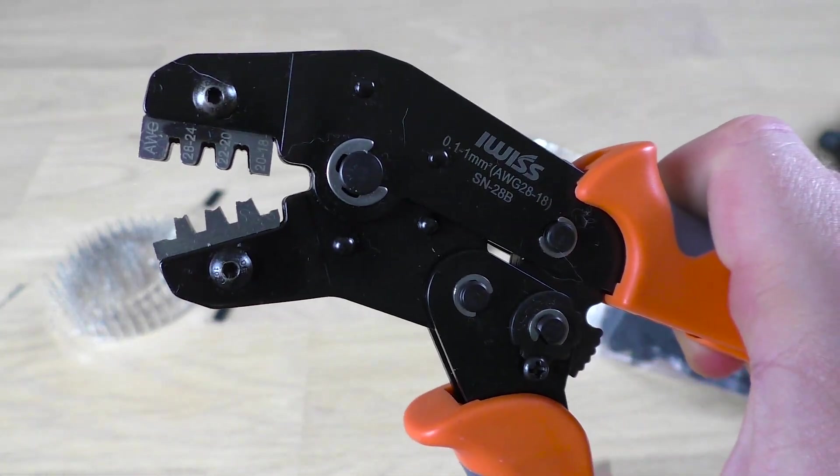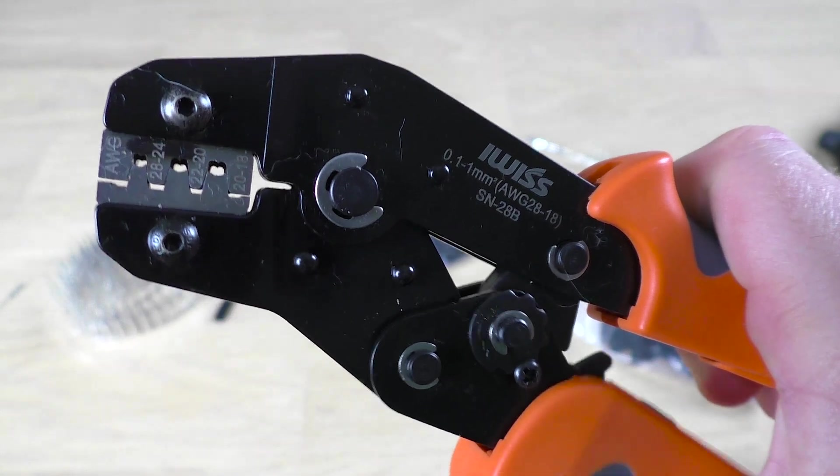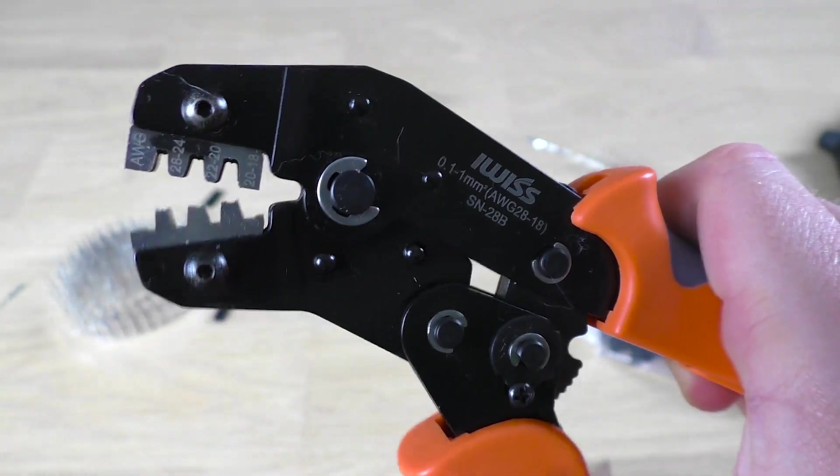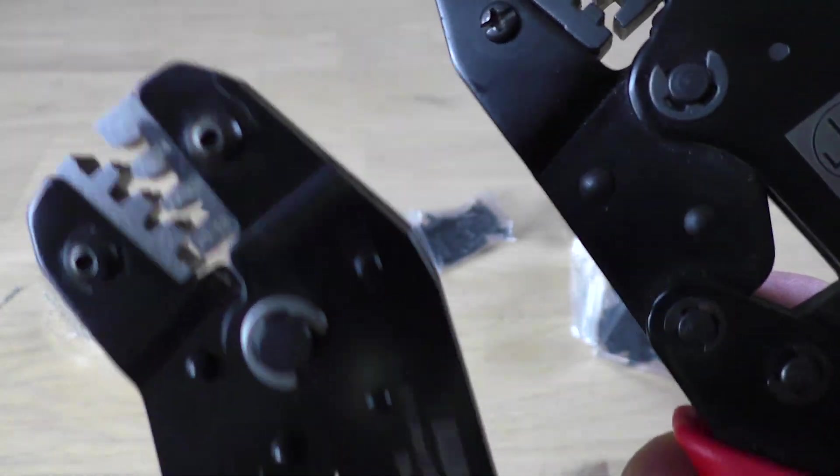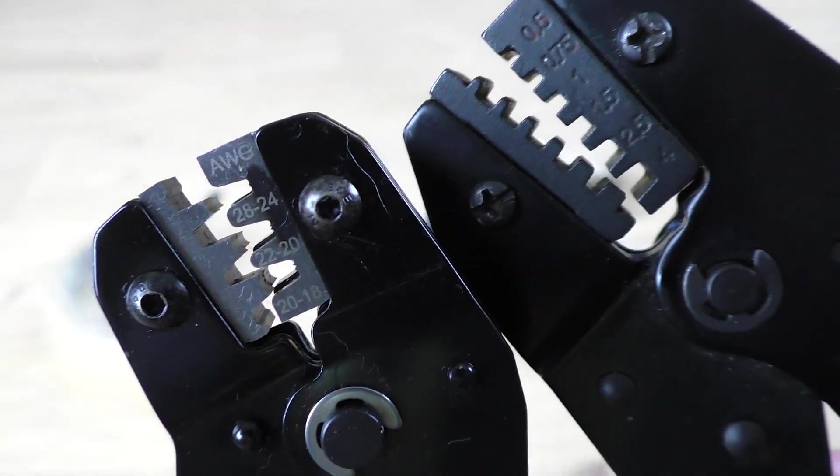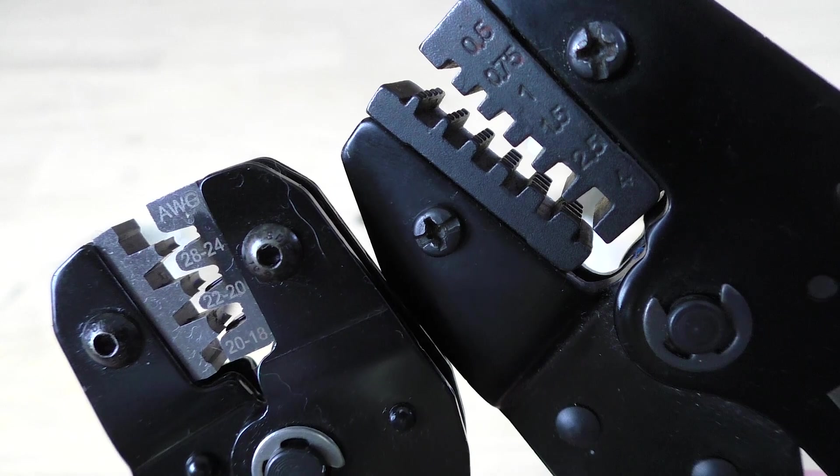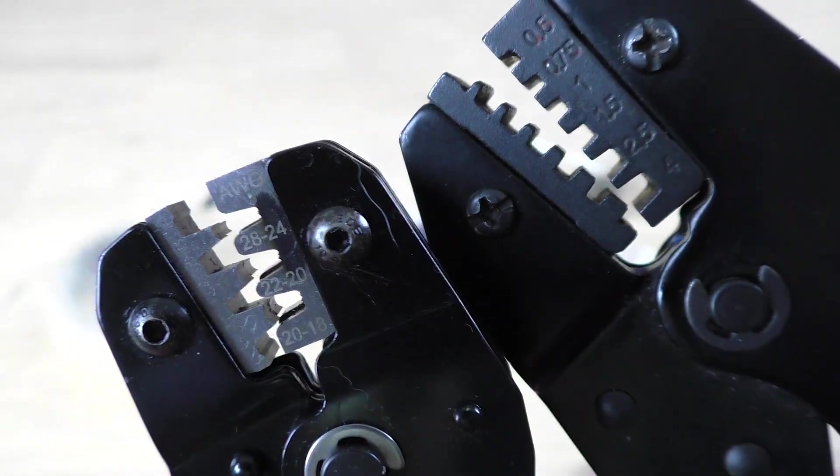Lastly, you also need a special crimping tool that can handle DuPont connectors. Sadly, ordinary crimpers have different dies that usually don't work for DuPont connectors, so you'll likely need a dedicated crimper.